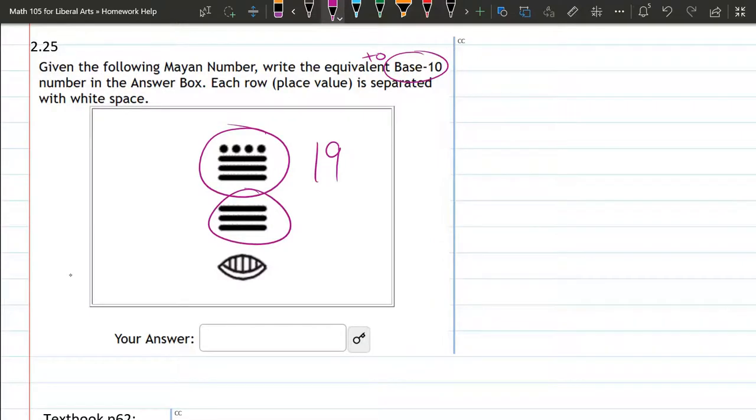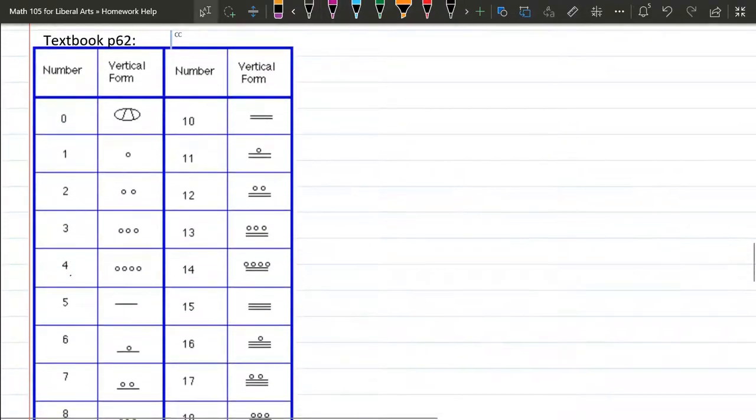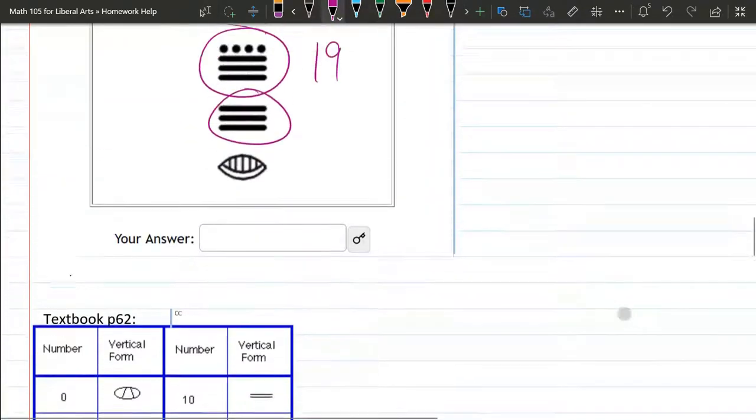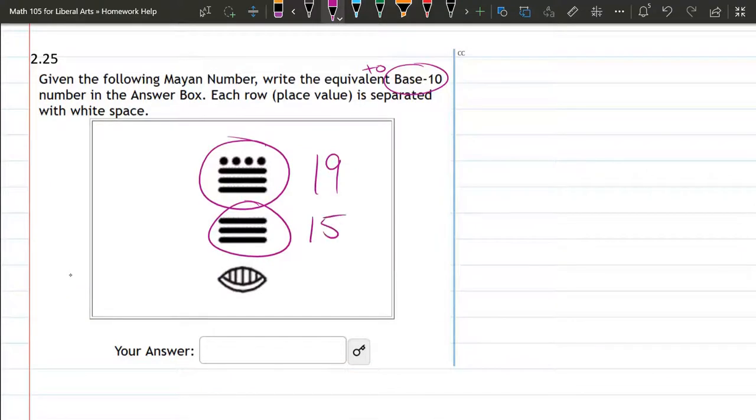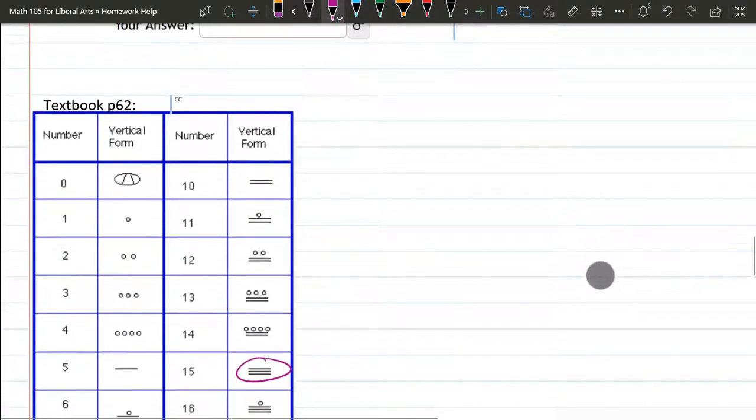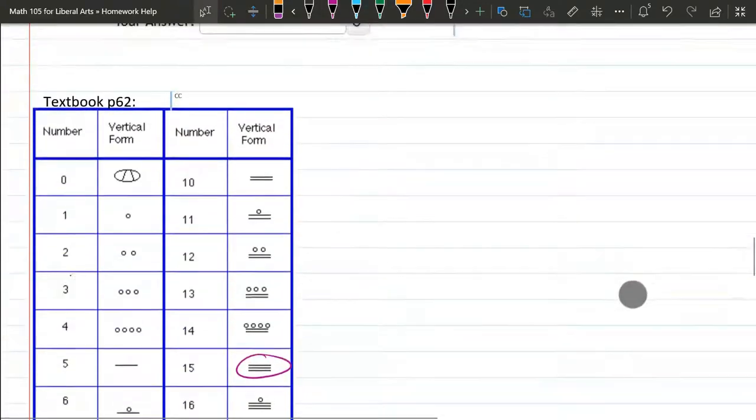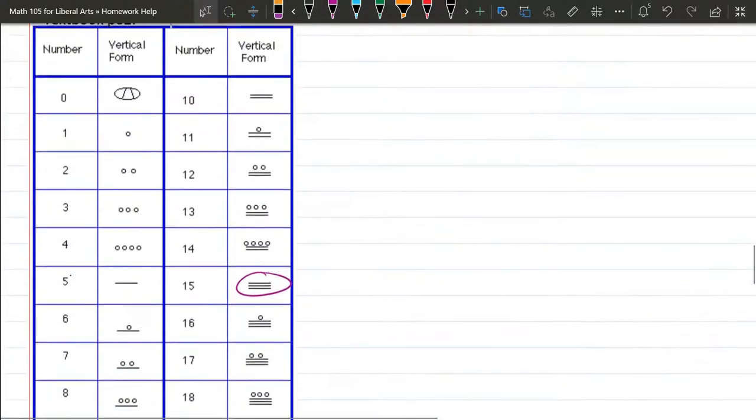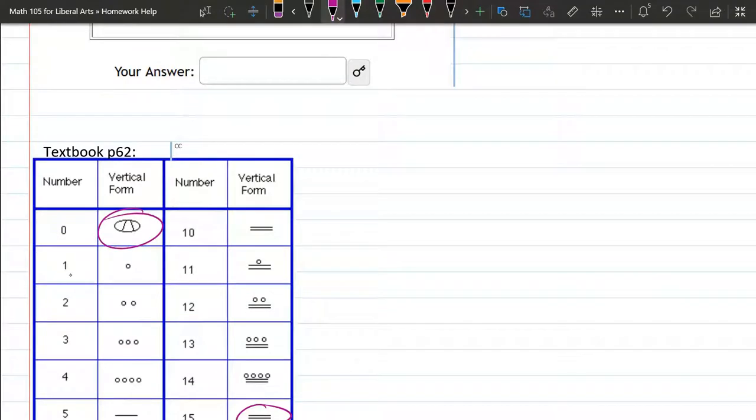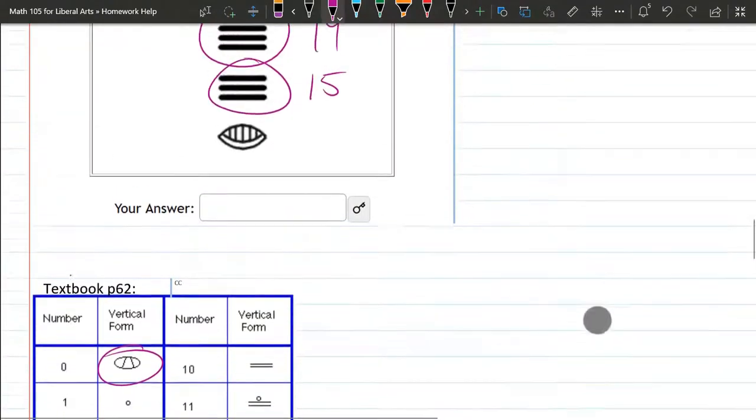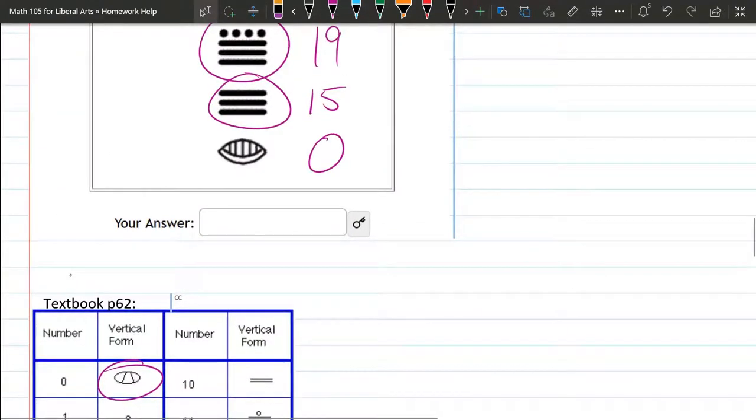Next up is three bars. That is a 15. Last up is not on the chart. However, that's going to be the closest one to it. So that's going to be a zero.